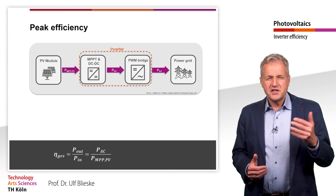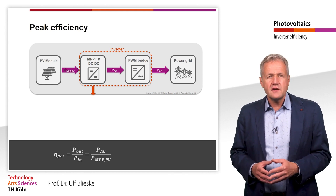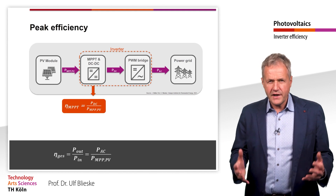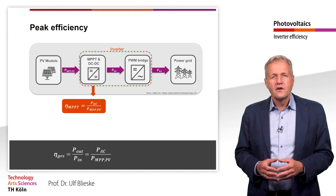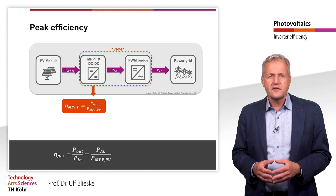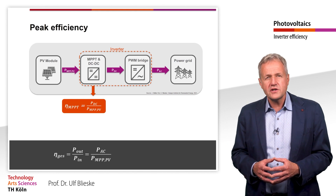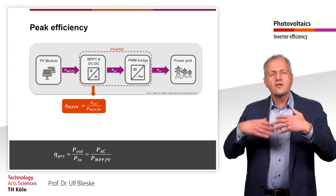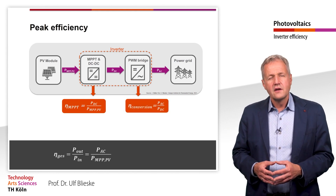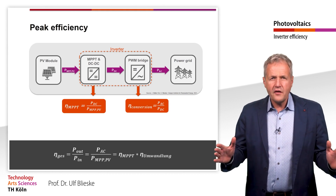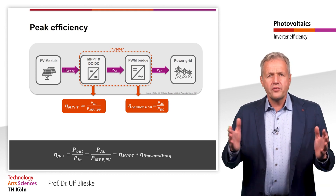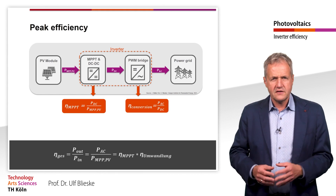The MPPT efficiency — that is the efficiency of the MPP tracker — was already explained in the first learning unit of this chapter. The second is the conversion efficiency. The total efficiency of the inverter results from the product of the two efficiencies.